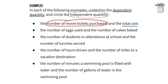The second one: the number of eggs used and the number of cakes baked. The number of eggs used depends on the number of cakes baked, because depending on how many cakes you're going to bake, that's how many eggs you use.